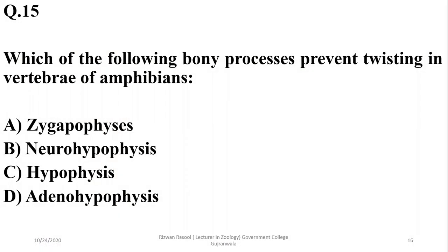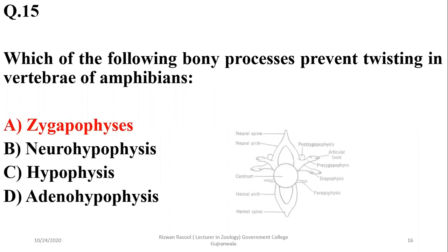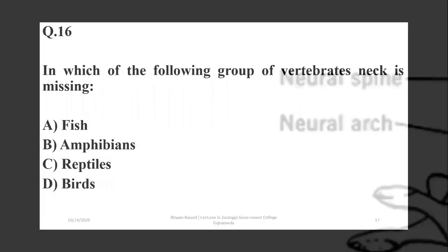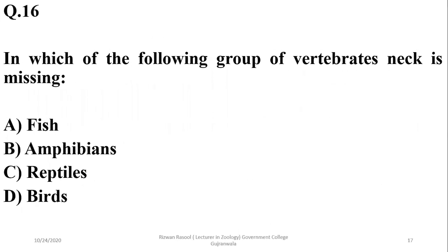Which of the following bony processes prevents twisting in the vertebrae of amphibians? These processes are known as zygapophyses, and they prevent twisting and help in the proper movement of the vertebral column.